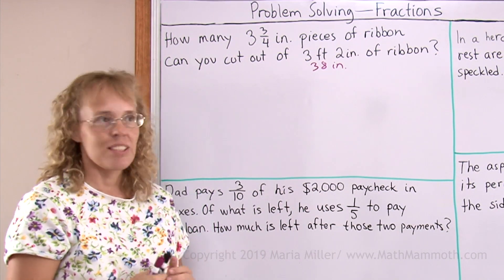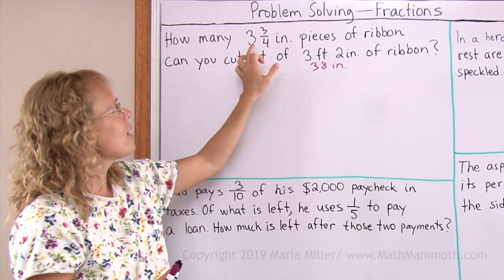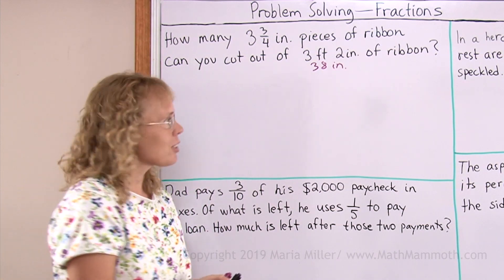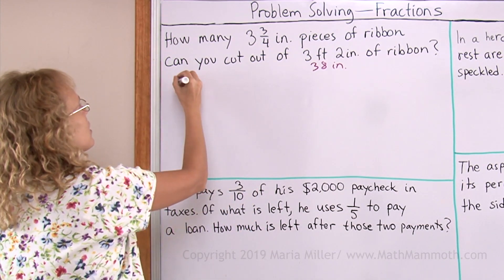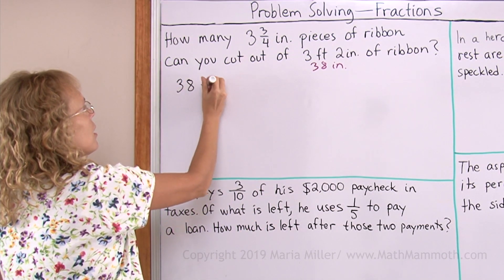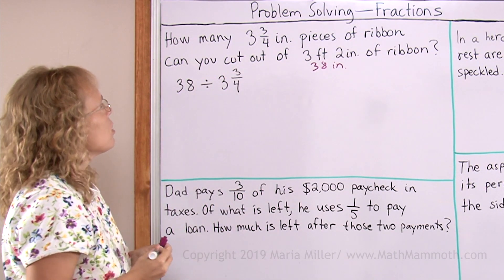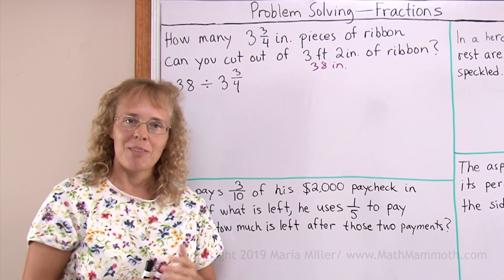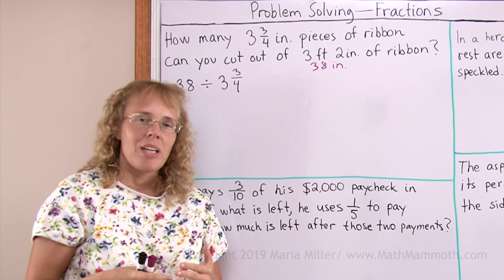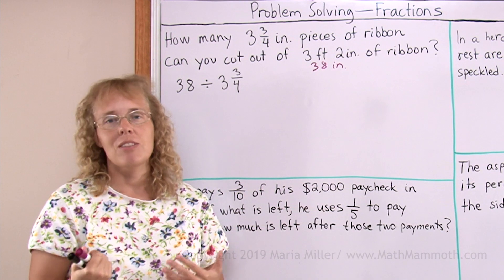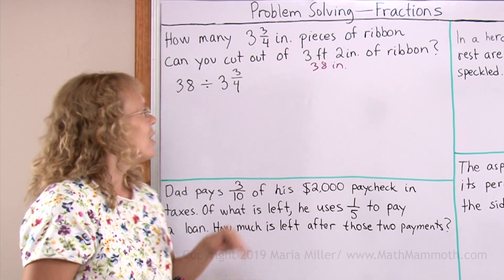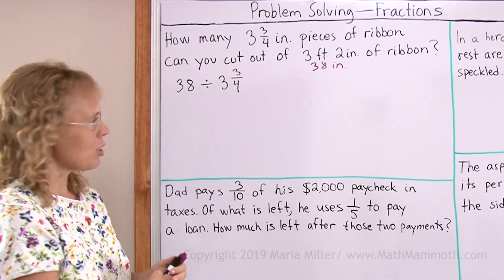Now all we need to do is divide 38 inches by that fraction then we should get the answer. So let's take 38 divided by 3 and 3/4. Now dividing by a mixed number, we have a shortcut for a fraction division, not a shortcut for a mixed number division. I need to change this into a fraction first.